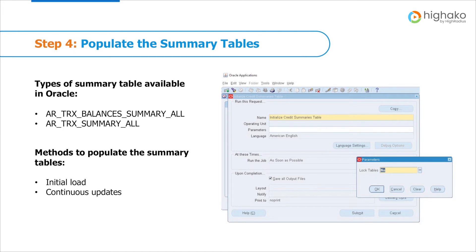Similarly, there are two methods to populate the summary tables. The first one is the initial load method, where you manually set the options. Once you set the summary table refresh profile option to yes, the program calculates and loads summarized data from Oracle Receivables for all customers. However, when the concurrent program successfully completes, the profile option is automatically set back to no by the system. The second method is Continuous Updates, which is an automatic process. This method comes in handy when you want continuous access to the current data set during credit reviews, as all subsequent transactions for your customers are automatically captured in the summary tables.